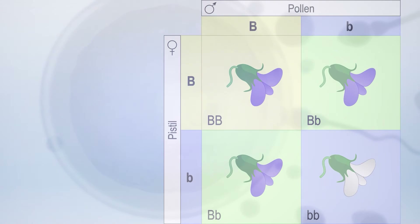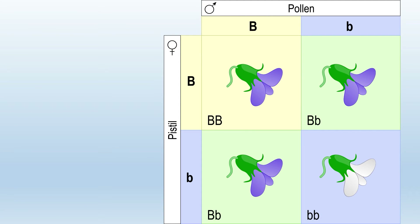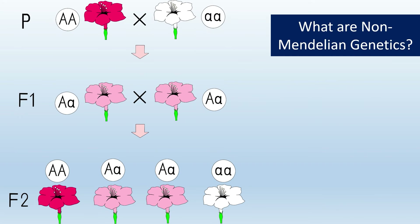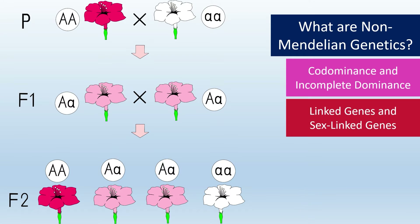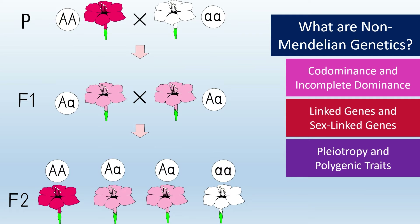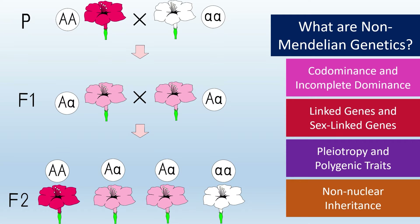While normal modes of Mendelian inheritance can redistribute traits and varieties, non-Mendelian genetics can add even more variety and complexity to living organisms. Non-Mendelian genetics includes different forms of dominance like codominance and incomplete dominance, and linked genes which are not inherited completely independently of one another. They also include genes that affect more than one trait, and traits that are determined by more than one gene.